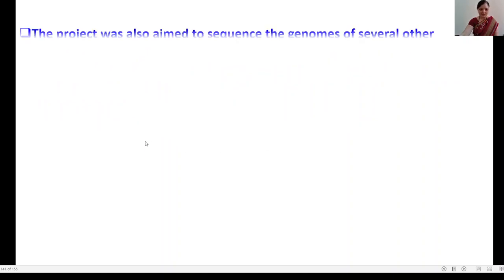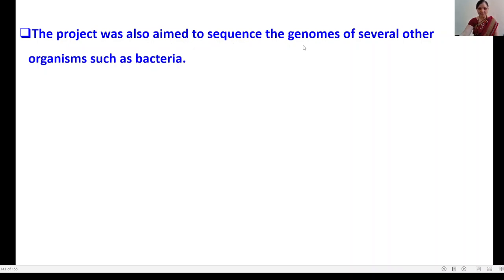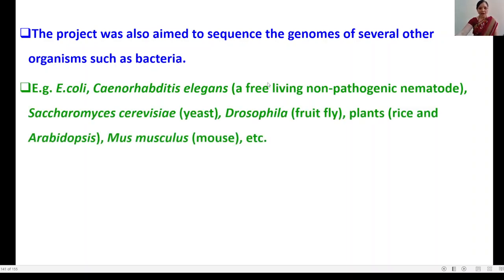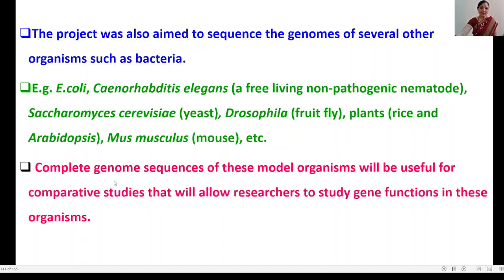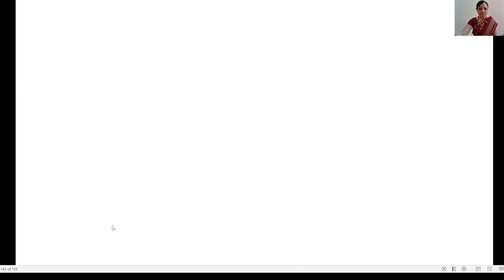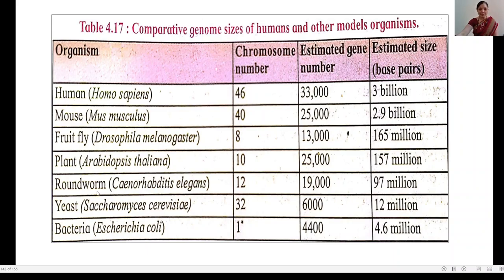The project also aimed to sequence the genomes of several other organisms: bacteria such as E. coli, the non-pathogenic nematode Caenorhabditis elegans, the yeast Saccharomyces cerevisiae, the fruit fly Drosophila, the plant Arabidopsis thaliana, and the mouse Mus musculus. Complete genome sequences of these model organisms will be useful for comparative studies that will allow researchers to study gene function.